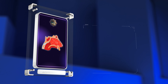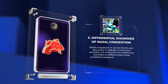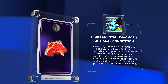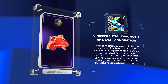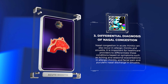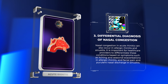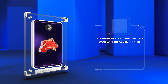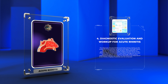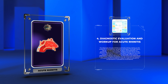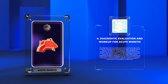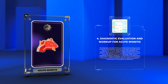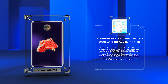Nasal congestion in acute rhinitis can also occur in allergic rhinitis and sinusitis. It is important for healthcare providers to differentiate these conditions based on symptoms such as itching and seasonal exacerbations in allergic rhinitis, and facial pain and purulent nasal discharge in sinusitis. The diagnosis of acute rhinitis is primarily clinical, relying on the presence of characteristic symptoms and signs. Thorough history taking, including the onset, duration, and progression of symptoms, can provide valuable insights into the nature of the infection. Physical examination may reveal findings such as nasal erythema, edema, and purulent discharge.